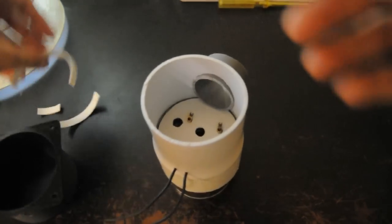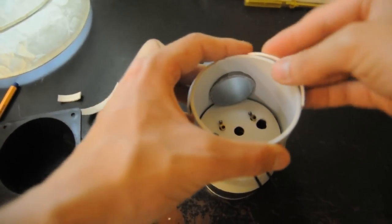Now attach the base of the fan on the top of the pipe and glue it around with hot glue and screw the fan in place.